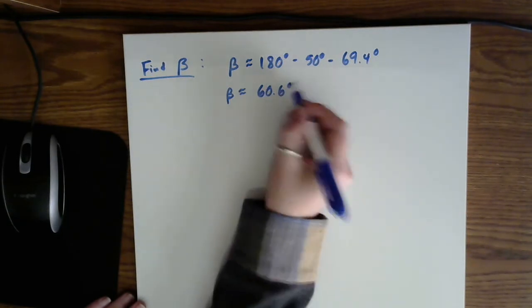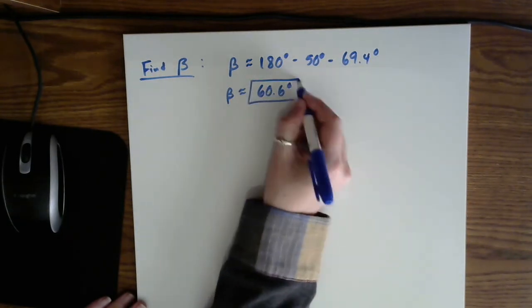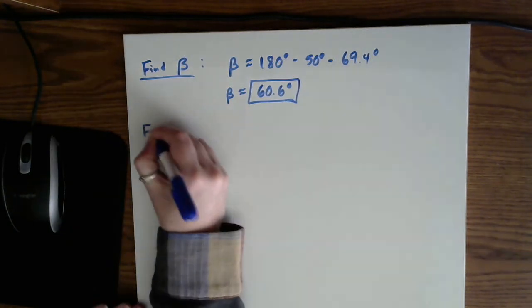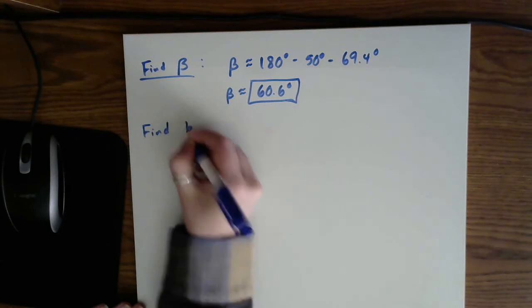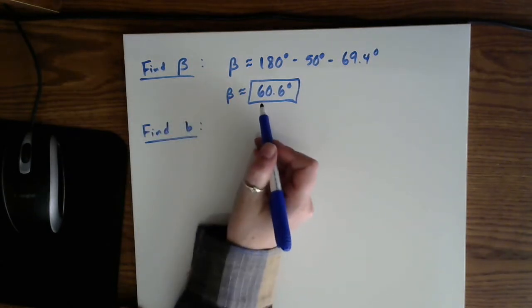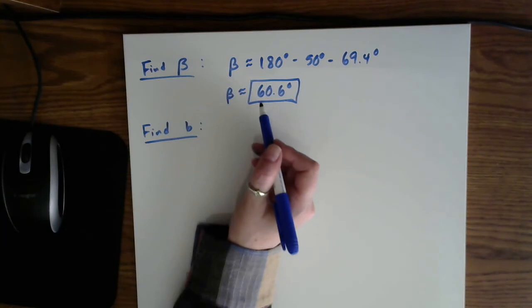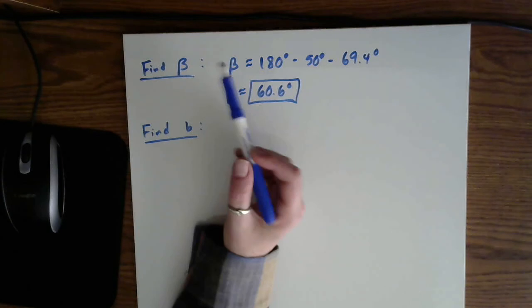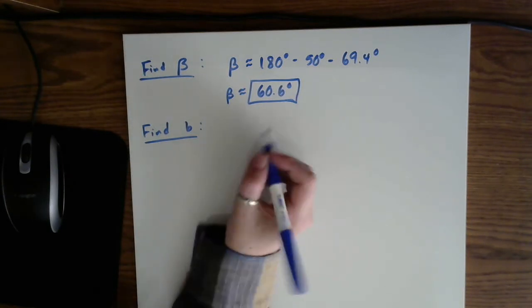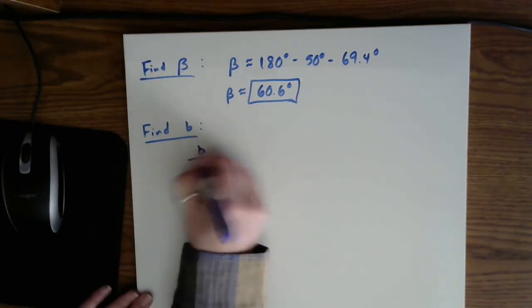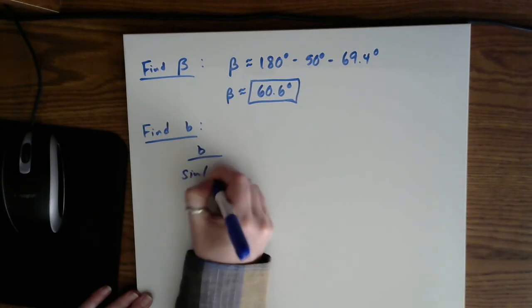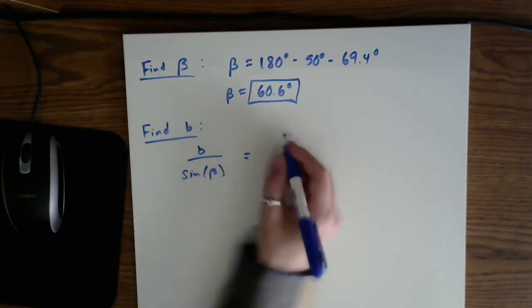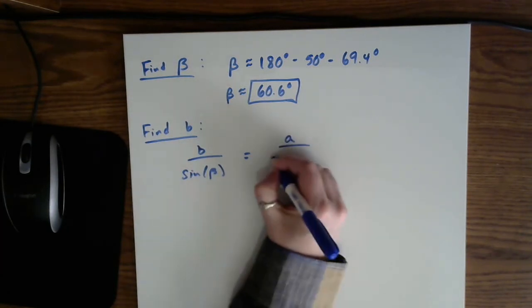Therefore, last, we need to find b. Well, we can finally find b because I know beta. So the idea is you can't find the side unless you know the angle or vice versa. So in this case, variable on top, b, sine of beta, and then use the information that was originally provided in the problem. So a and alpha. Go ahead and substitute. So b is what we're looking for. Beta is what we found in the previous step. A was given in the problem, as was alpha.